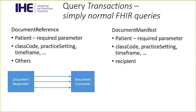There is a third transaction, which is to retrieve the document itself. The results of a document reference query are document references, and in the document reference is a URL. The format of that URL is completely up to the document responder — it could be a normal binary URL or some other format. The document consumer can simply do a GET request on that URL, given the security wrapper. That covers the equivalent of document consumer functionality using MHD.